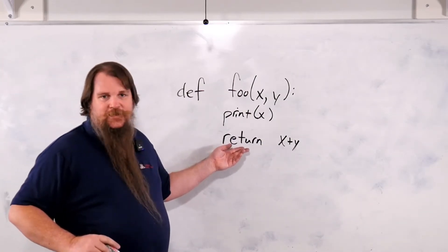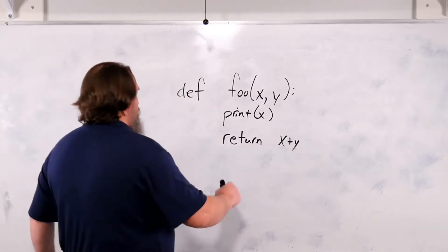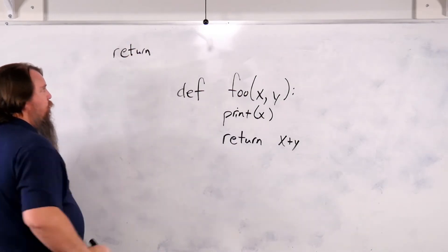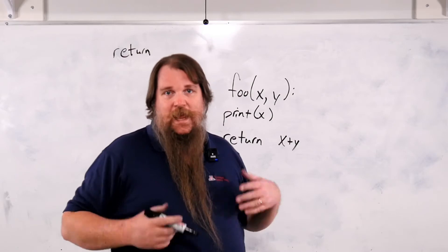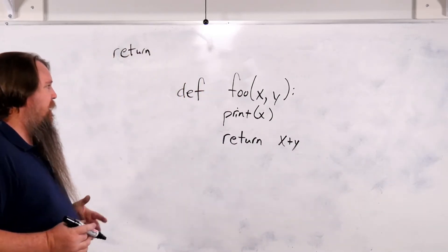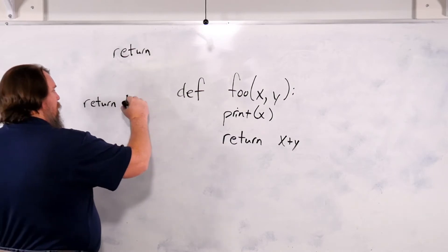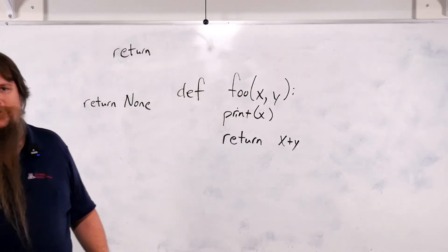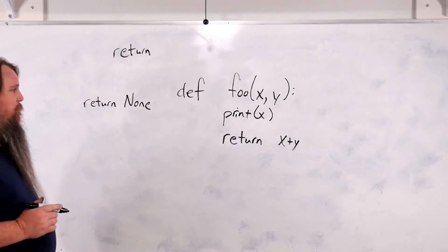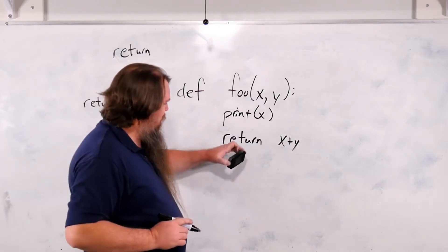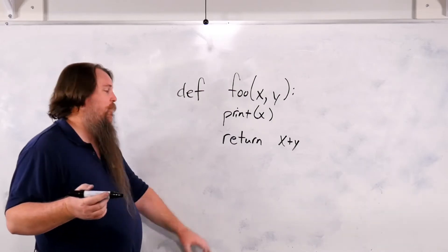Alright, so a return statement means that the value that someone else sees, the return value from this function will be whatever you give. If you choose to simply write return with no value at all, or if your function simply terminates, it gets to the bottom of the function and falls out of it without any return statement, then actually Python returns a special value. It's the equivalent of returning something called none.